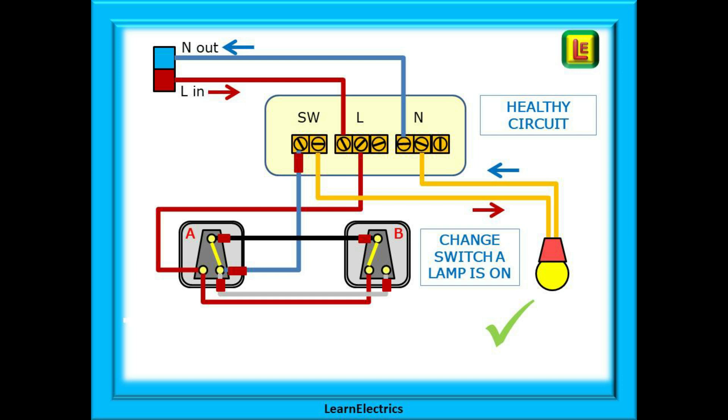This time we will change switch A over. The electric comes from the live loop to switch A on the first brown wire and then travels to switch B on the second brown wire. It goes through switch B to the black wire, along the black wire back to switch A, through switch A to the blue phase wire and up this blue phase wire to the switch block, along the pendant wires to the lamp, back to the neutral block and out on the neutral wires. A complete circuit so the lamp lights up. So easy when it works correctly.